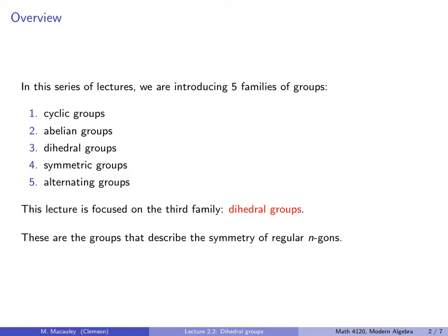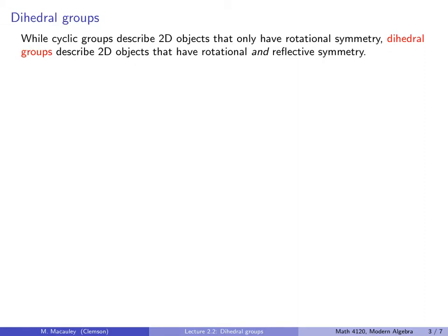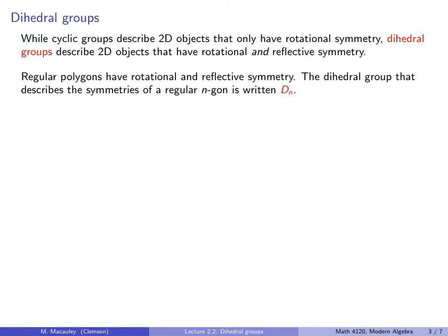Dihedral groups are those that describe the symmetry of regular N-gons. While cyclic groups describe 2D objects that have only rotational symmetry, like pinwheels, dihedral groups describe 2D objects that have rotational and reflective symmetry. Regular polygons are an example of such objects. The dihedral group that describes the symmetries of the regular N-gon is written D_N.